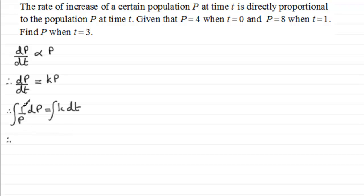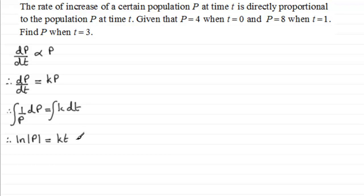The integral of 1 over p with respect to p is the natural log of p, and the integral of the constant k with respect to t is kt. We get a general constant C, combining the constants from both sides. We don't really need the absolute value sign because the population p is always positive.